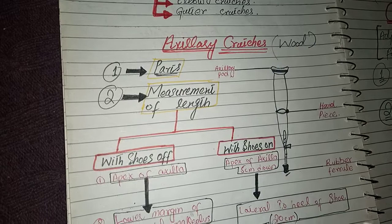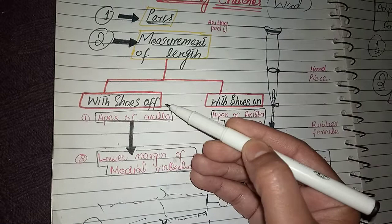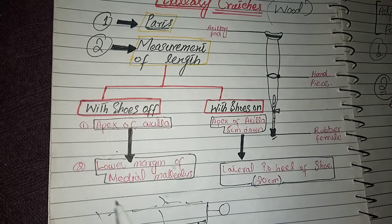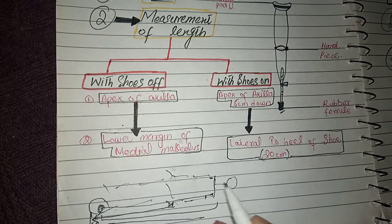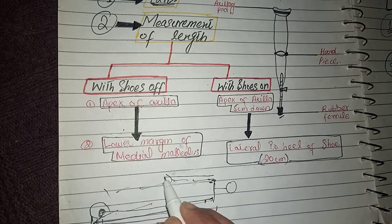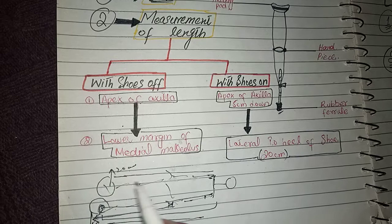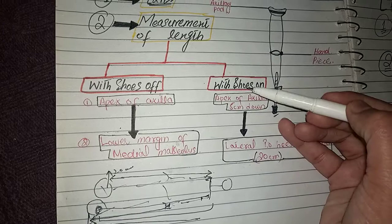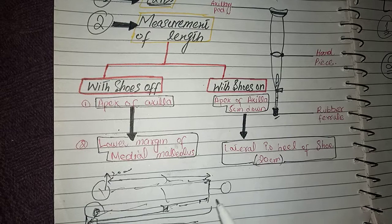Now the measurement of length. Measurement of length for axillary crutches is taken through two procedures: first with shoe off, and second with shoe on. For shoe off: the first point is from the apex of the axilla and the lower point is the lower margin of the medial malleolus. The second method is from the apex of the axilla, 5 cm down from the apex, and then 20 cm lateral to the heel of the shoe.